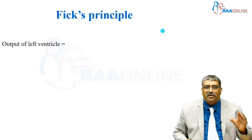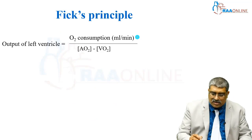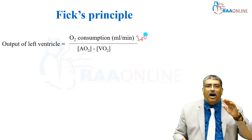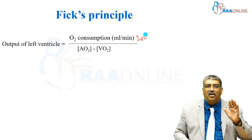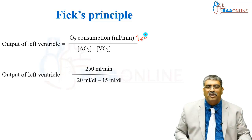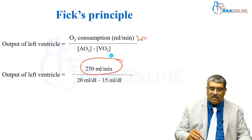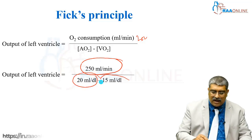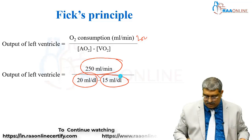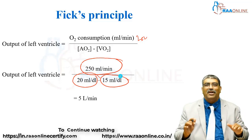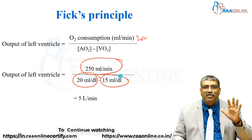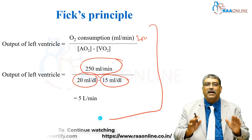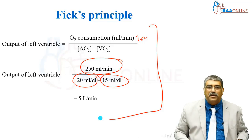The output of the ventricle — your cardiac output — is based on oxygen consumption, which is 250 ml, and the difference in the arterial and venous oxygen concentration. The consumption is 250 ml. The arterial side content is 20 ml per deciliter and the venous side it is 15 ml per deciliter. Substituting the values, you get a cardiac output of 5 liters per minute. This is how you calculate cardiac output based on Fick's principle.